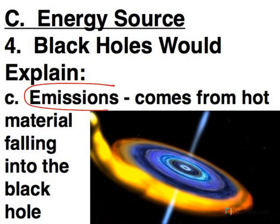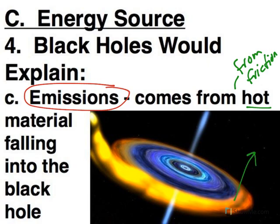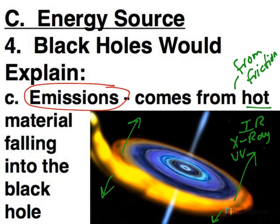All that emission comes from this hot material, and it's hot from friction as it falls through the accretion disk. So we're getting all sorts of infrared, ultraviolet, and x-ray radiation coming off of the accretion disk because of these extreme conditions.